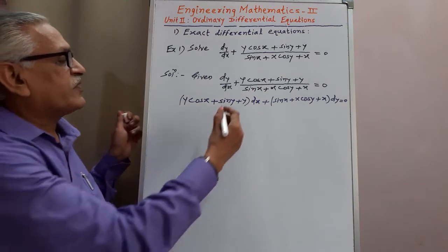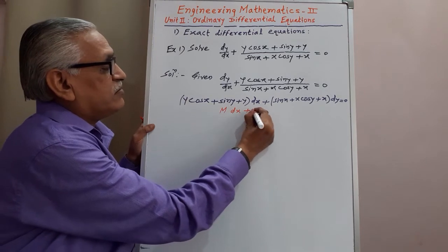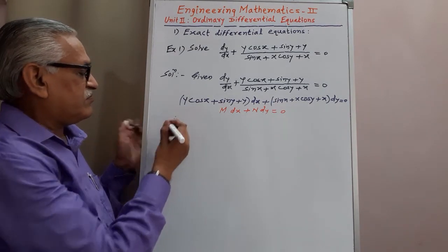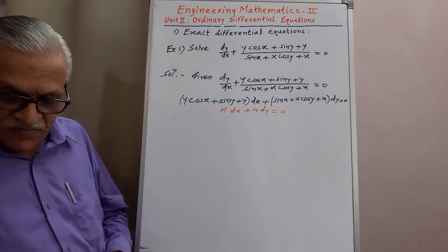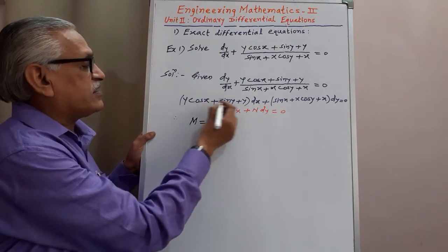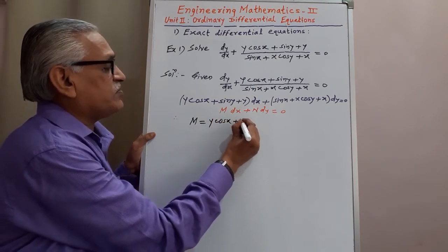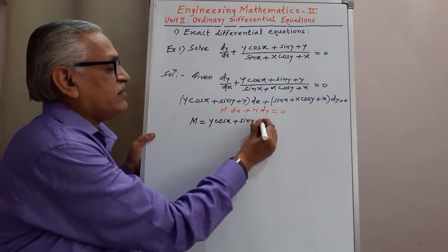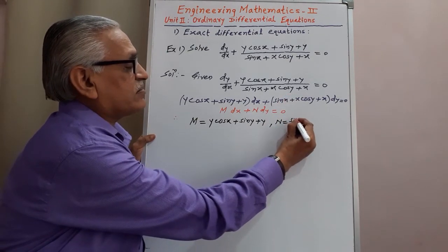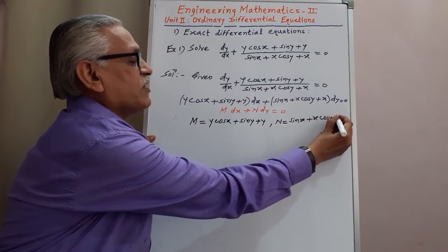Comparing this with the general form of exact differential equation M dx + N dy = 0, we get M as the coefficient of dx: y cos x + sin y + y, and N as the coefficient of dy: sin x + x cos y + x.